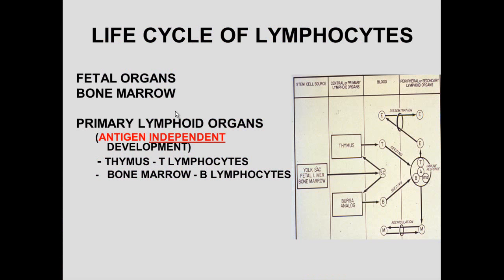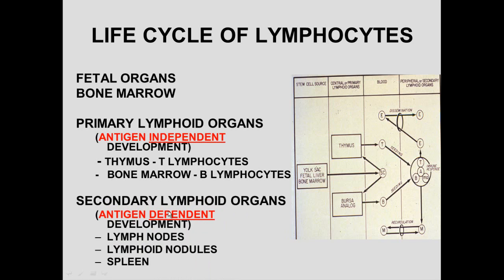In ontogeny, fetal organs are the initial source of lymphocytes, then production moves to the bone marrow. The primary lymphoid organ is the thymus, where the blood-thymus barrier prevents developing T lymphocytes from encountering antigens until they are mature. Bone marrow is the primary source of B lymphocytes. Secondary lymphoid organs — lymph nodes, lymphoid nodules throughout the GI tract, and the spleen — are antigen-dependent, meaning reactive cells must contact antigens there. Primary organs keep antigens away; secondary organs bring antigens and reactive cells together.